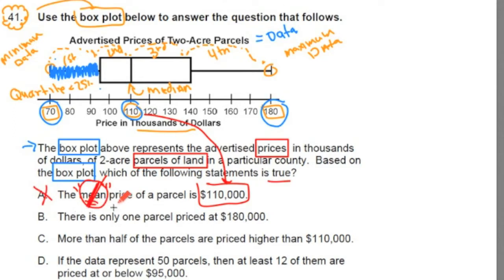Let's go to B. B says there is only one parcel priced at $180,000. Now look at our diagram. In evaluating it, we identified $180,000 as our maximum data point. And right now it's kind of hard to see, but this fourth section here, we don't know how those data points are distributed. There could be more than one data point, more than one parcel of land sold for $180,000. So for that reason, since there could be more than one data point in that last quartile, we cross it out.